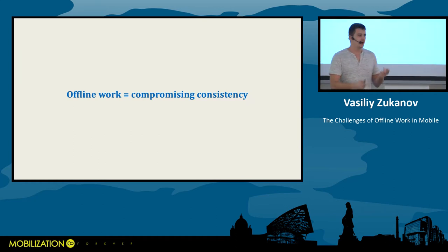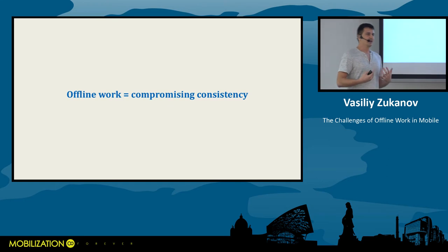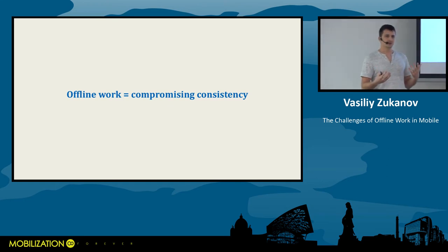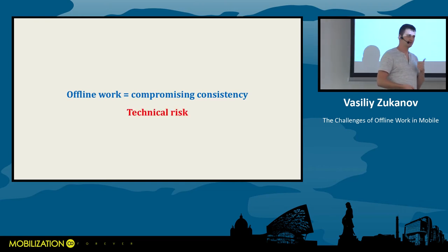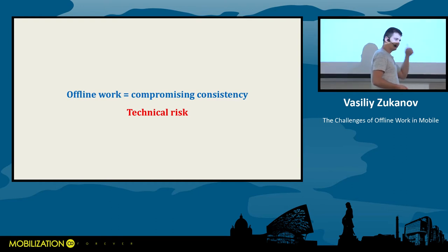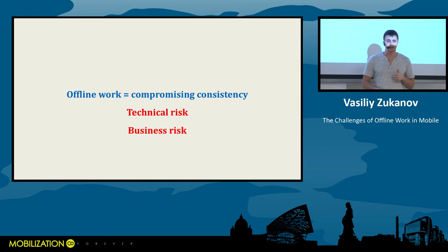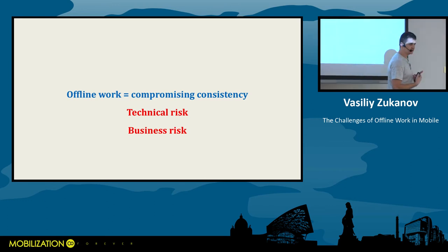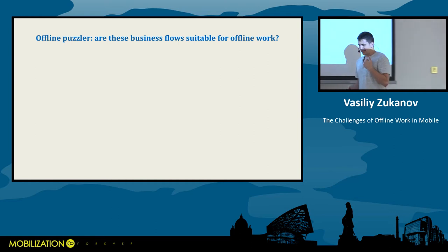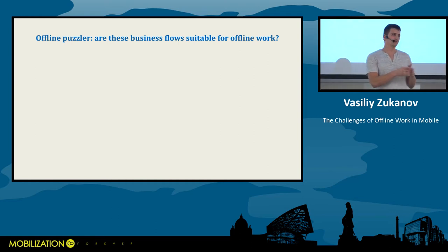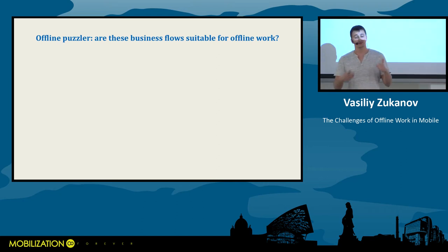Compromising consistency sounds like a bad thing to do instinctively — and it is a really bad thing. First of all, it's a technical risk because you will need to write a lot of code to compensate for compromising consistency. Second — and this is not talked about nearly enough — it is a business risk for the entire project. So let's do a puzzler. I will show you some flows, and you will need to vote whether this flow is suitable for implementing offline work.